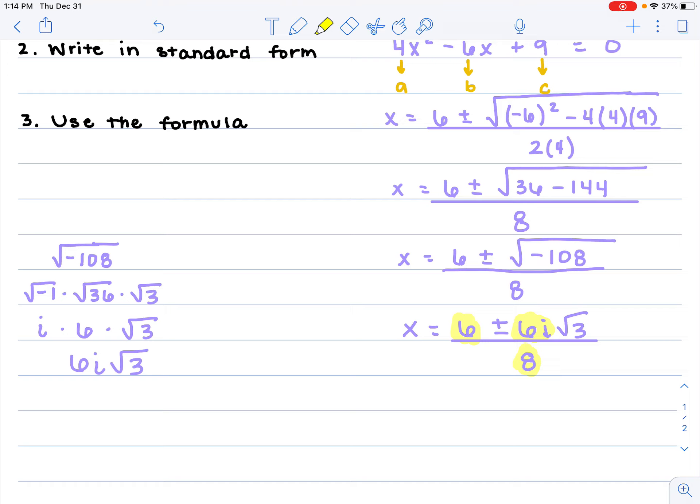If I wanted to reduce that fraction, 6 over 8, I couldn't leave that because they have a GCF. They have something in common. I think all of those have a factor of 2 in common. So when I factor that out, I've got (3 ± 3i√3)/4.